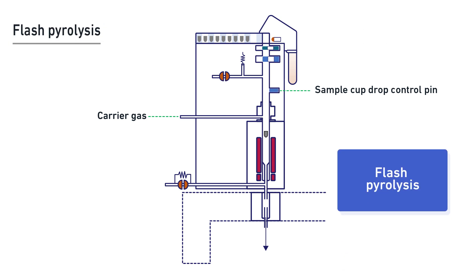When the analysis of the volatile fraction is complete, the GC oven temperature is reset to initial temperature, and the pyrolyzer furnace is set to the pyrolysis temperature. The inert sample cup is again dropped into the furnace, where flash pyrolysis occurs rapidly and reproducibly.